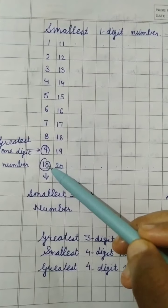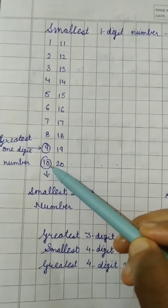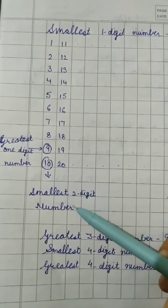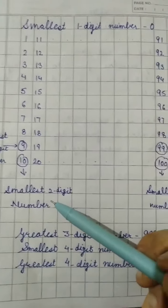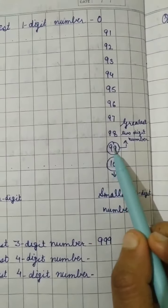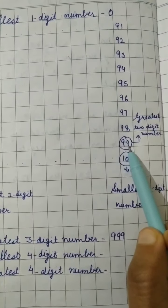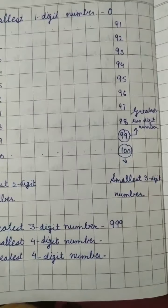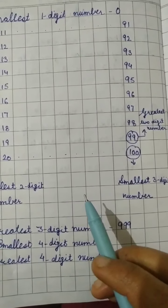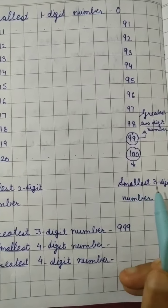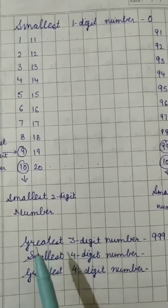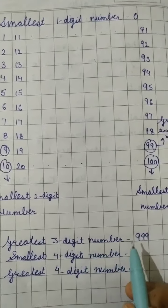After 9 the next number is 10 which has two digits. So this is the smallest two digit number and while moving till 99 we will get 99 which is the greatest two digit number and the next one is 100. This is the smallest three digit number. Now the greatest three digit number is 999.